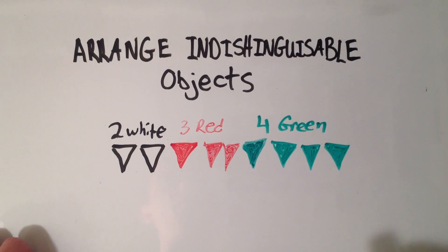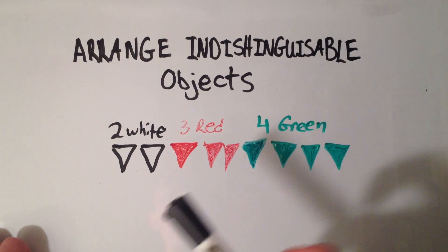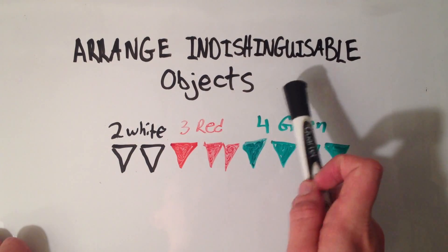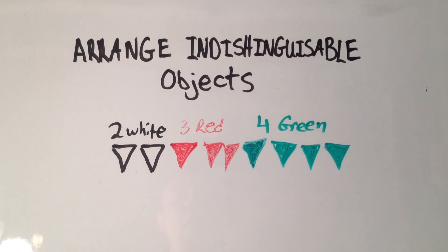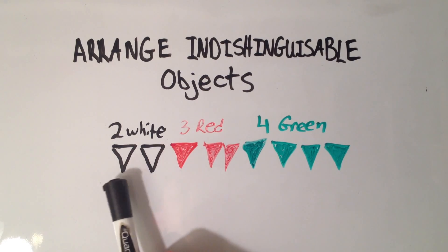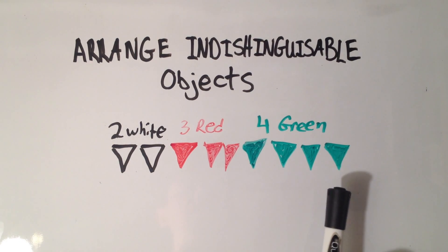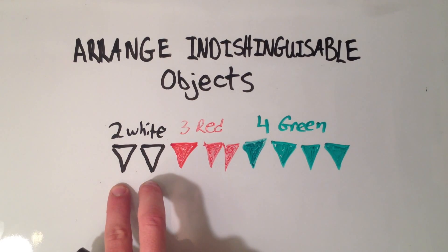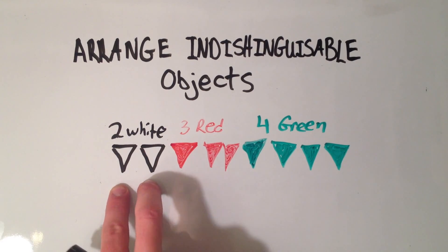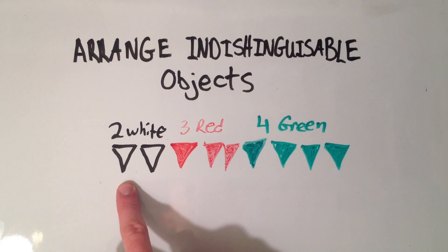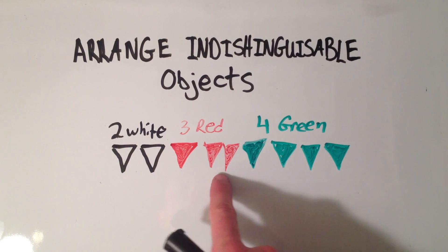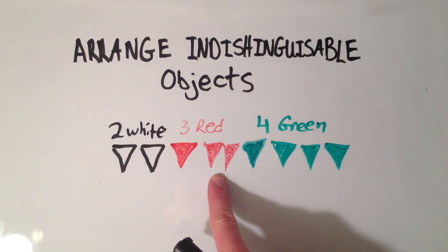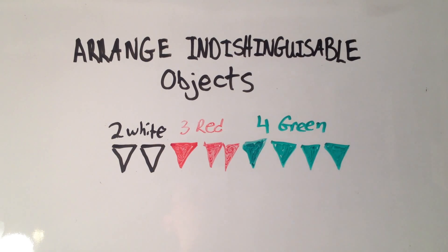In this video I want to talk about the number of ways to arrange indistinguishable objects. I have nine flags here. These two white flags are the same, so I can't distinguish between the two white flags. And I can't distinguish between the three red flags, and I can't distinguish between the four green flags.